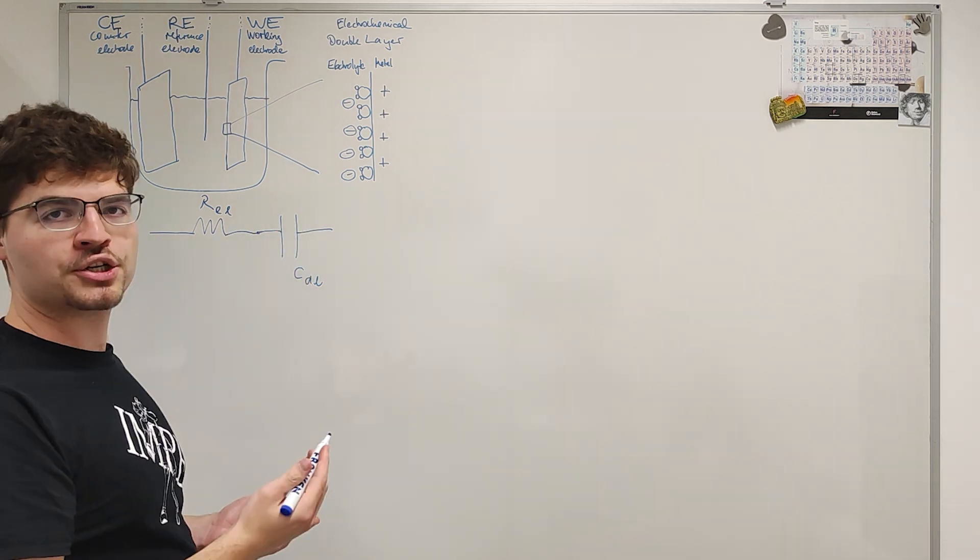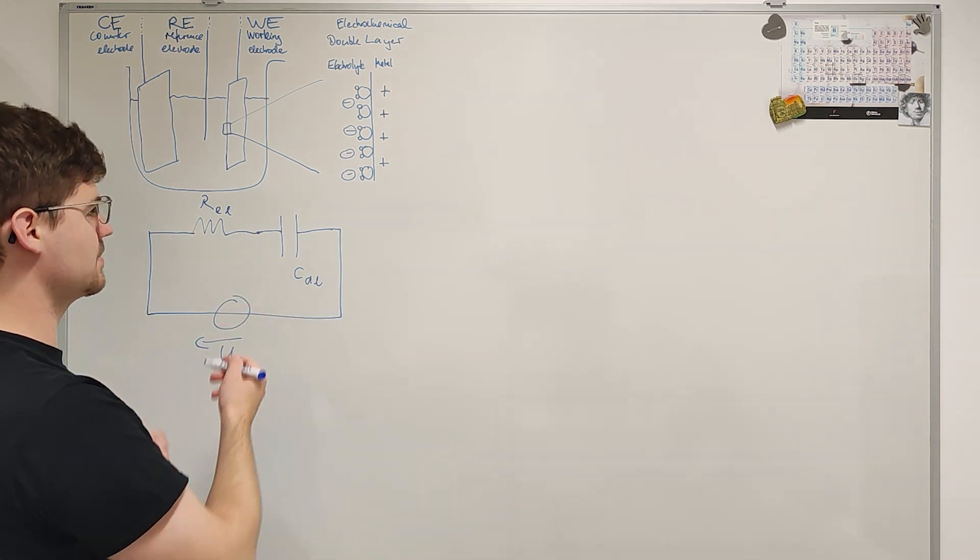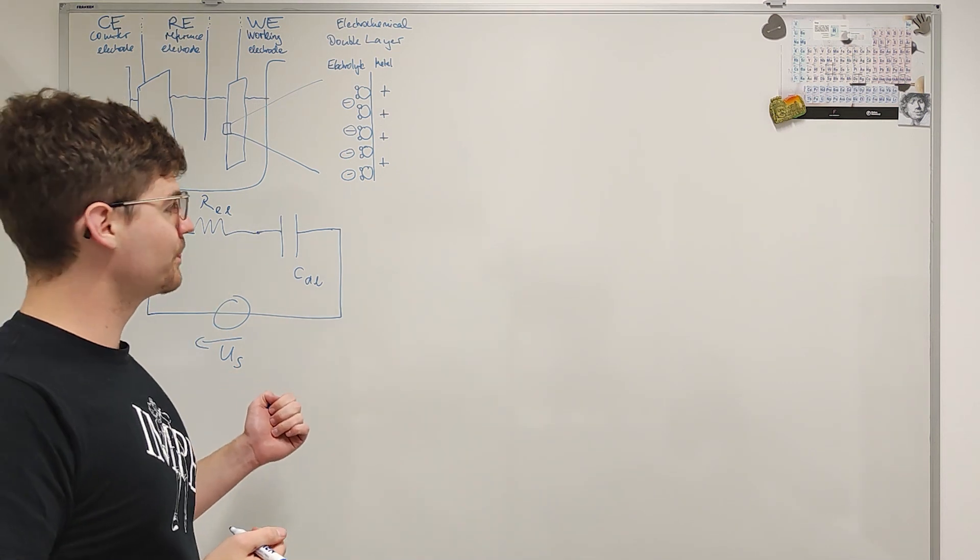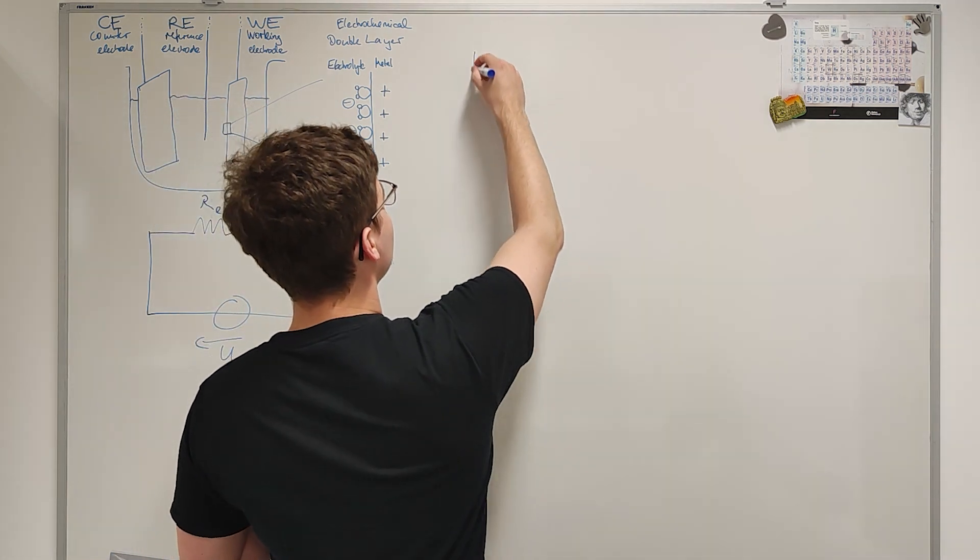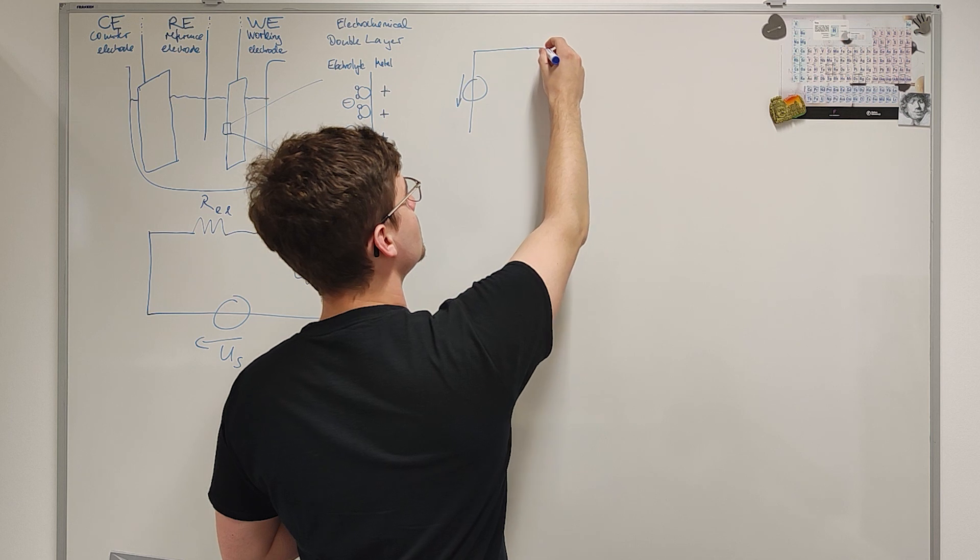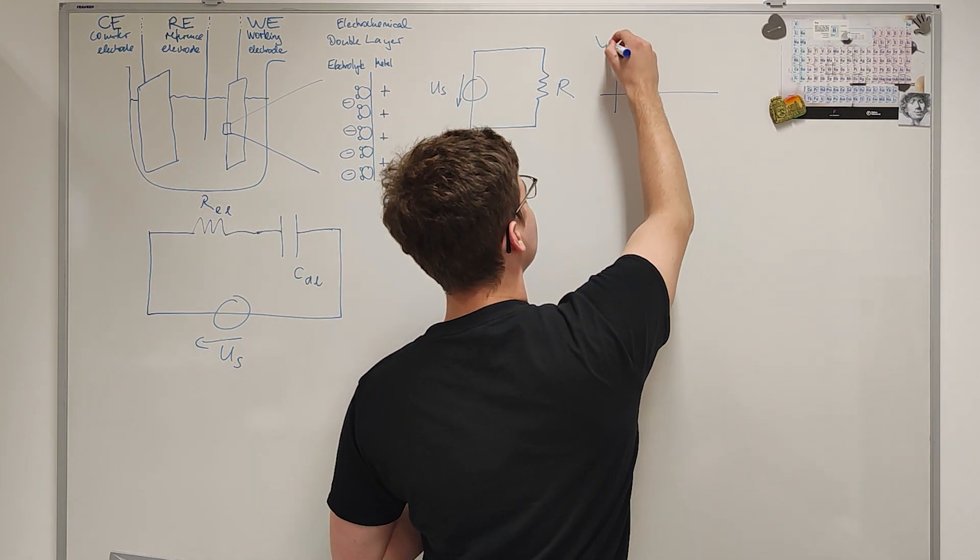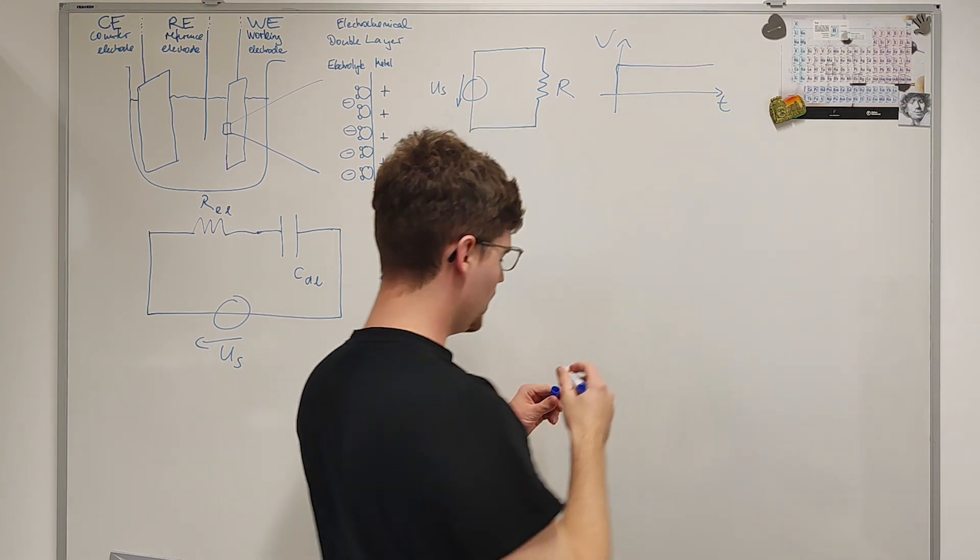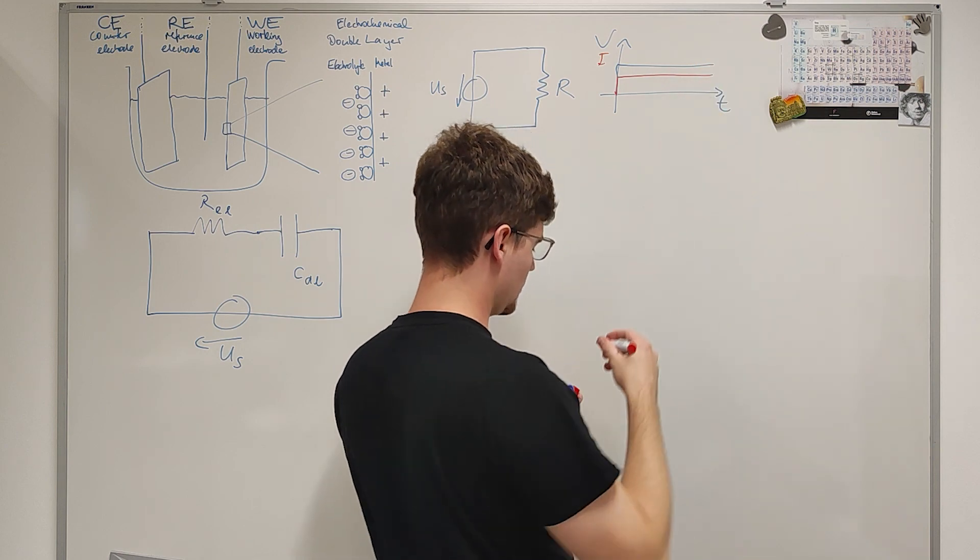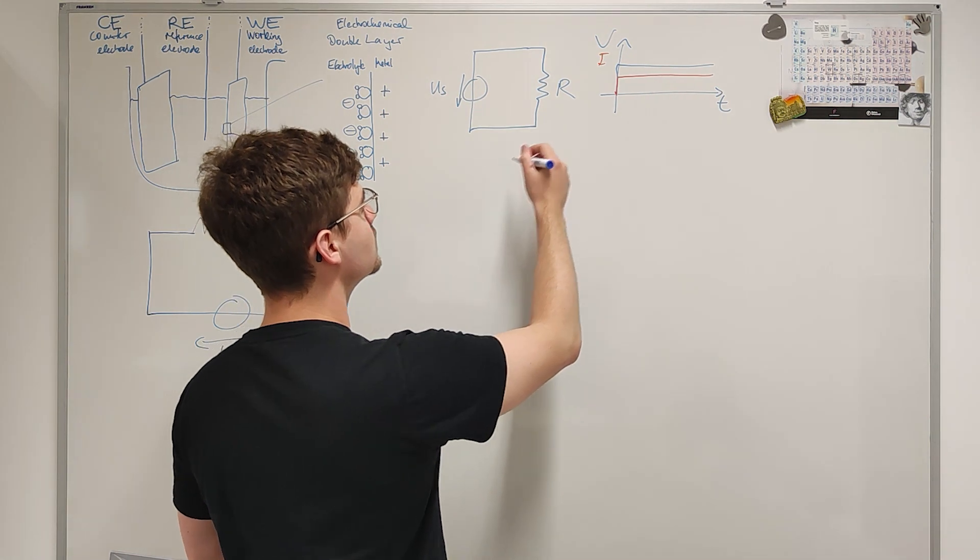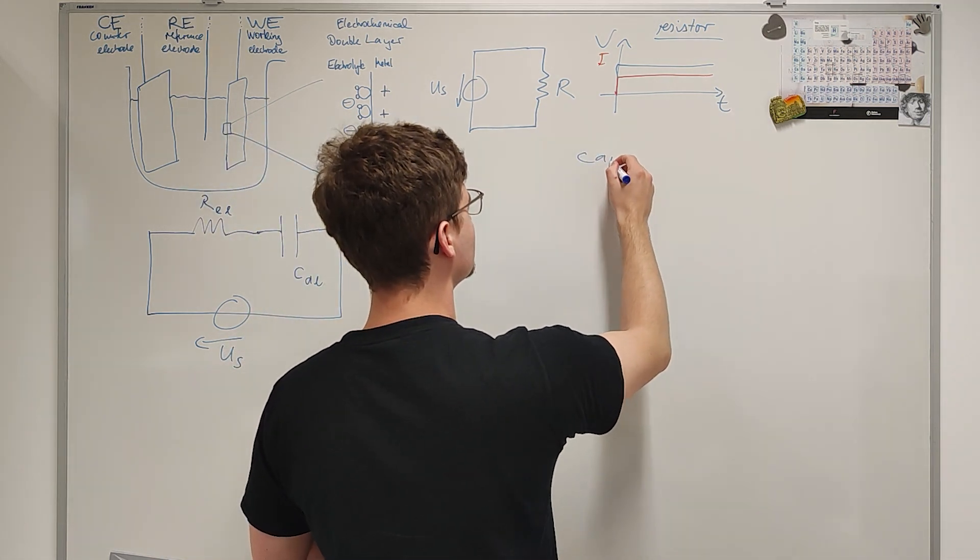And this electrolyte conductivity can be modeled by an ohmic resistor. And we may call this the resistor with the resistance RL for R electrolyte. And to this system, the potentiostat, which I will model as an ideal source, applies a voltage step US. Now, if you recall, these circuit elements, we've discussed their responses to step excitations on their own. So a brief recap. If we apply such a potential step to a resistor with a voltage over time, just a step, we get a proportional current step response.